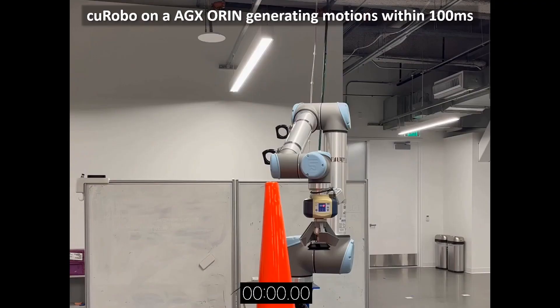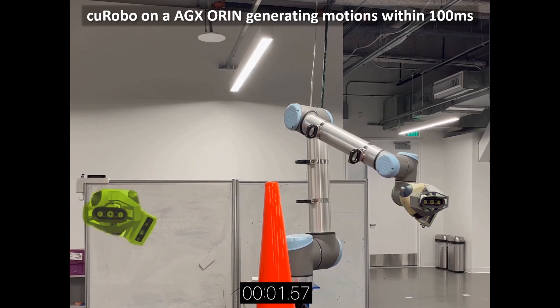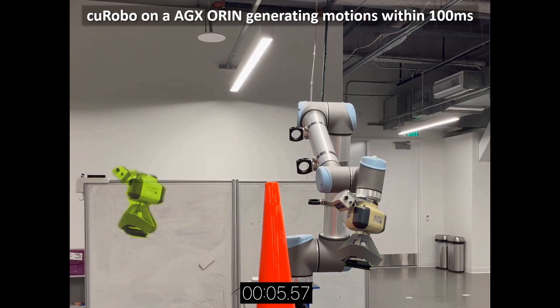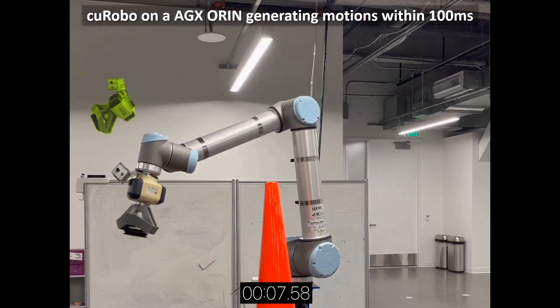The quick planning time enables Kurobo to generate motions for real robots on an NVIDIA Jetson. In this scene, Kurobo takes 100 milliseconds to plan motions on median to reach different targets visualized with green markers.